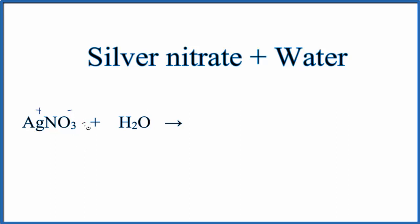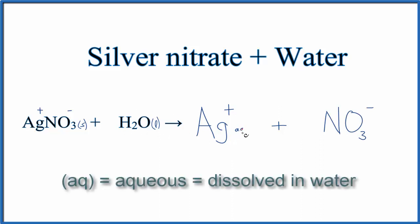So we take solid silver nitrate, and we add it to water, a liquid, so we'll have Ag plus, and then we'll have the nitrate ion. Because each of these ions are dissolved in our water, we can write AQ after them, which stands for aqueous, dissolved in water. Since they're dissolved in water, we don't need to write water on this side of the equation.